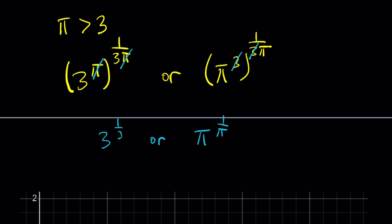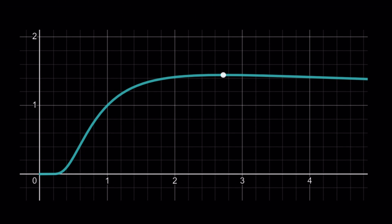Before continuing with the solution, I want to show you a graph based on what we have so far. Try to guess what that graph is and how we can use it. At the end, I'm going to show you on the graph how we can use this to compare these numbers. They're pretty crazy numbers because they are definitely irrational, and most likely transcendental — a special class of irrational numbers because of pi. So here's the graph. Take a good look, and then we'll continue.